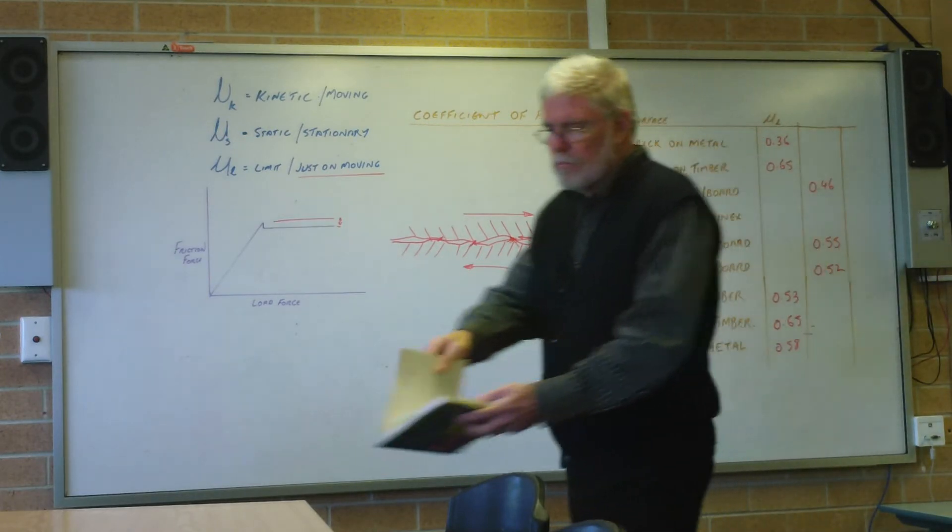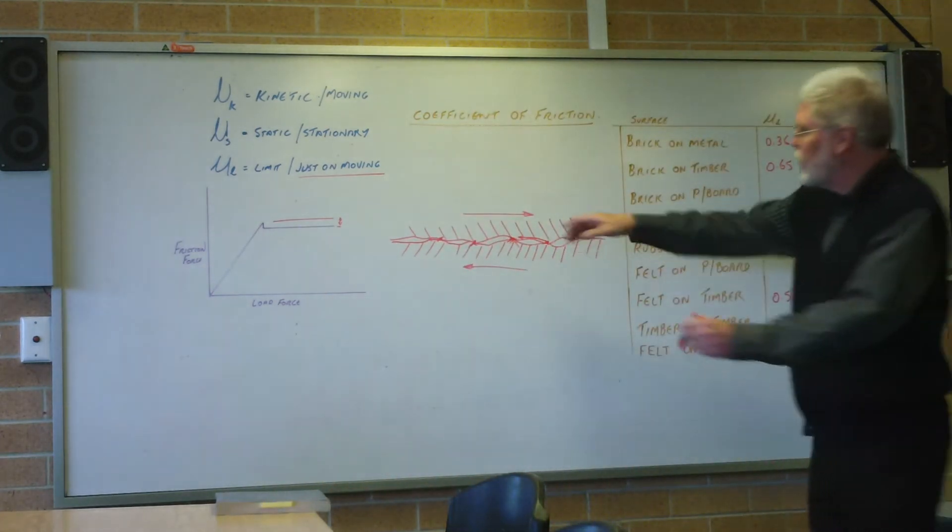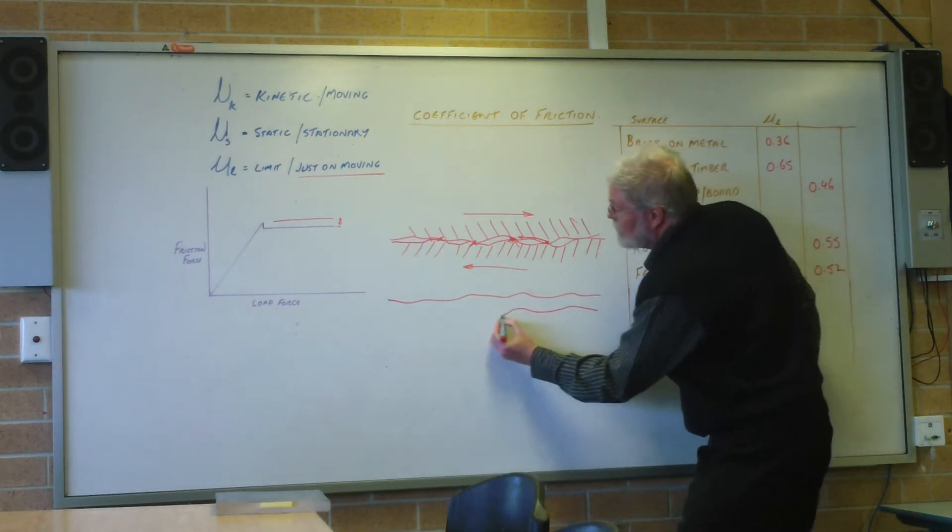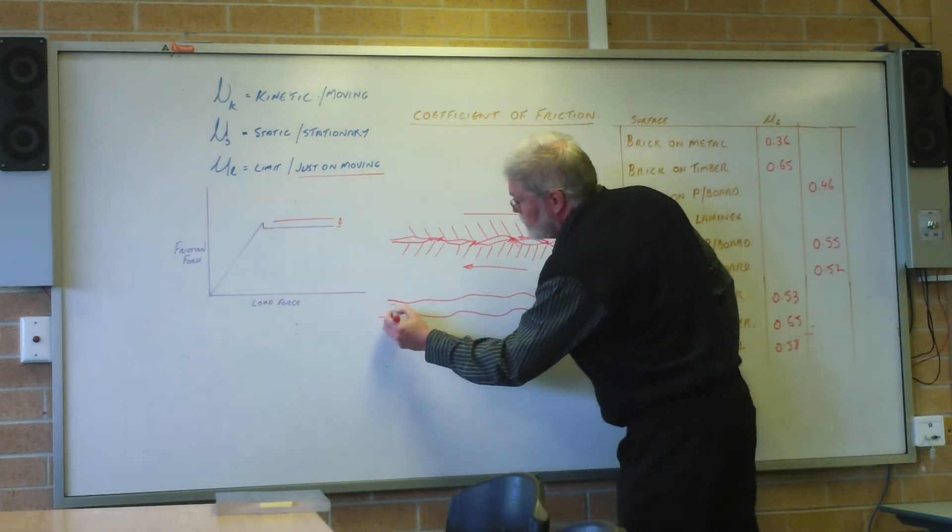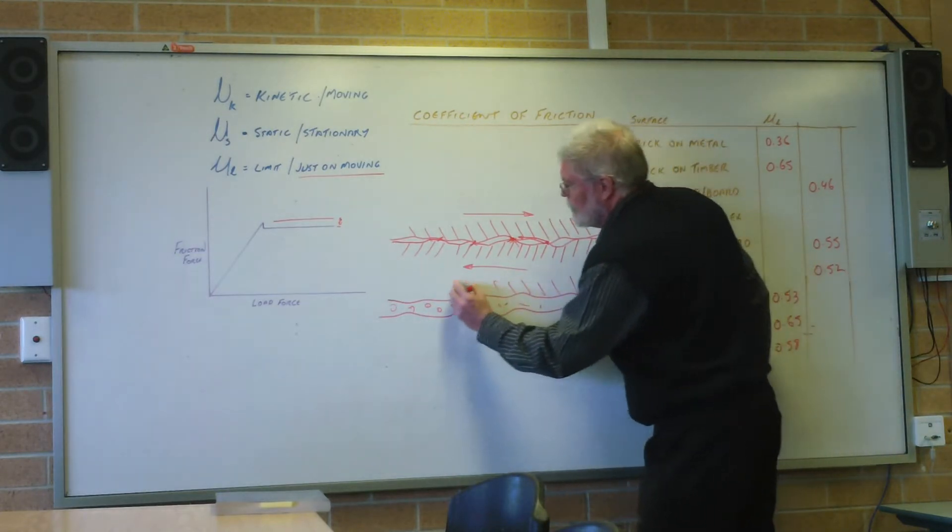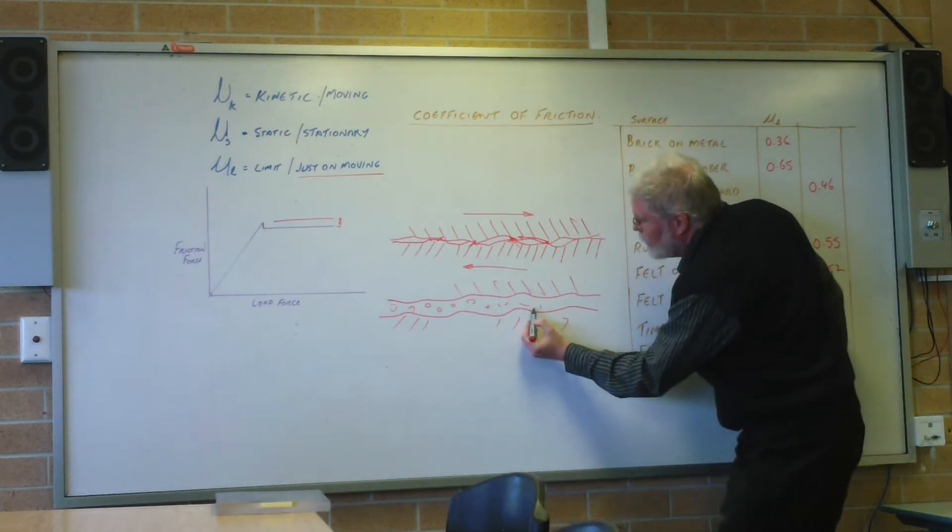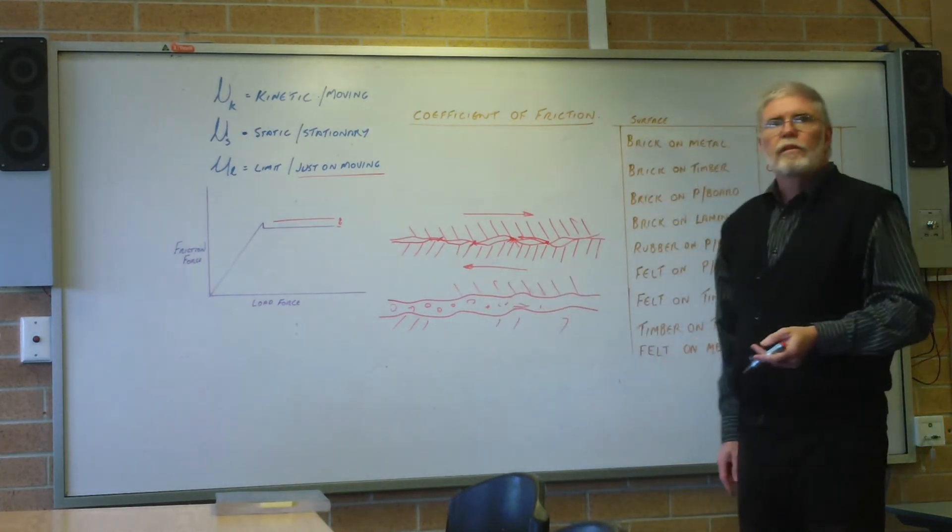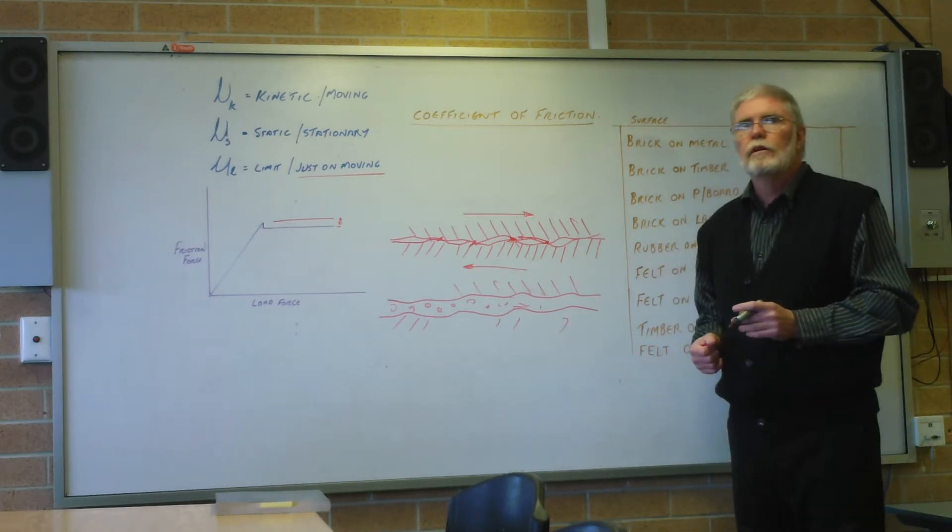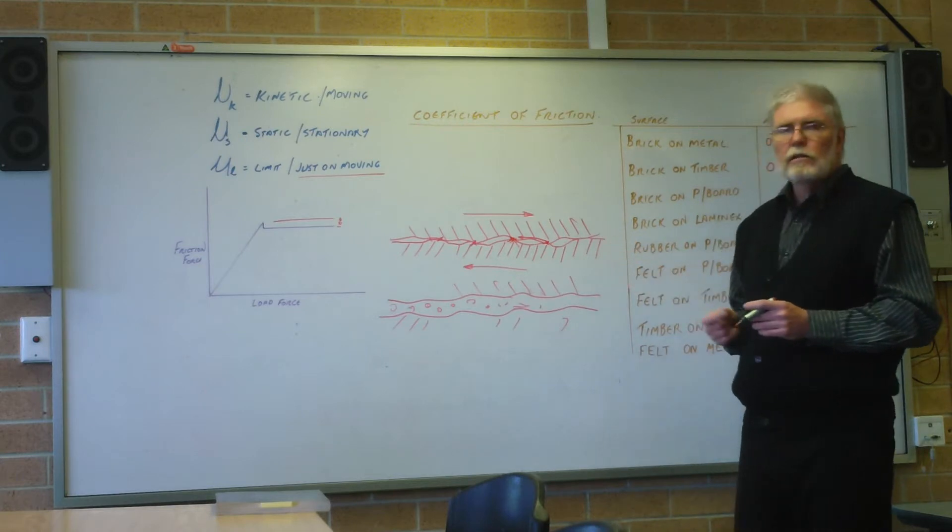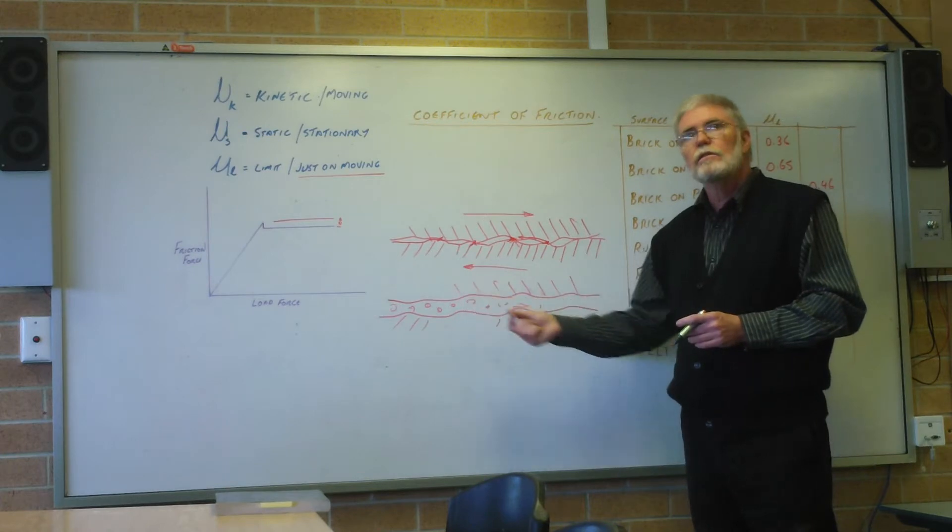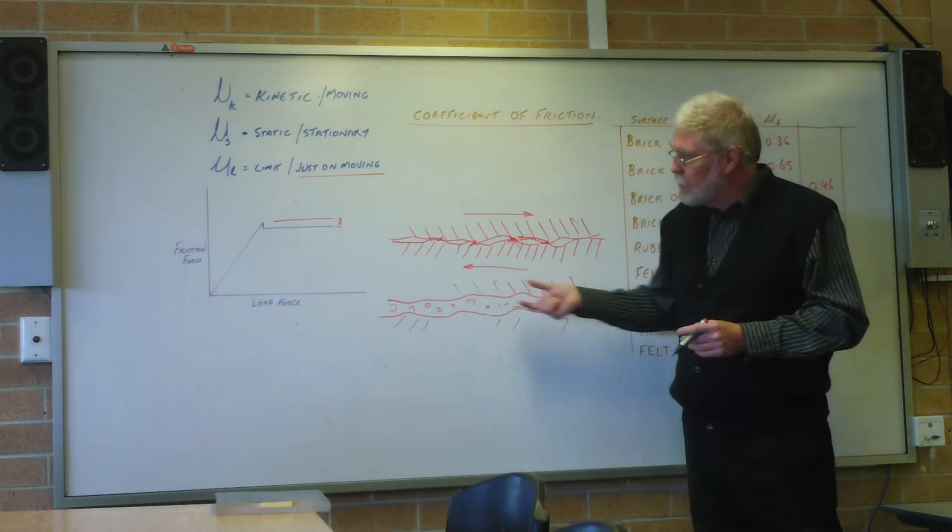Just to sketch that for you, what will happen is if I had those two surfaces, the same sort of roughness level, but I separate them by putting oil in here, some sort of fluid in there. Then clearly when I try to move, there's no connection here - they're not hitting, they're flowing. So you've reduced your friction right down. That has to do with a number of other things with the oils.